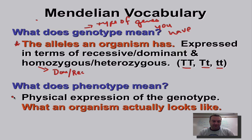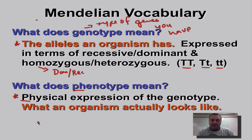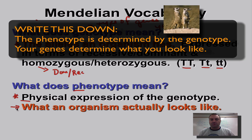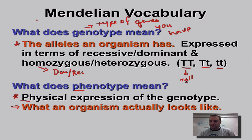Phenotype — the book definition is the physical expression of the genotype. A handy mnemonic: 'ph' in phenotype stands for physical. In plain English, it's what you look like, or what proteins you're making. For example, if I describe the phenotype of a tall individual, that phenotype is simply 'tall.' The genotype is the letters (like big T, little T), and the phenotype is the outward expression.